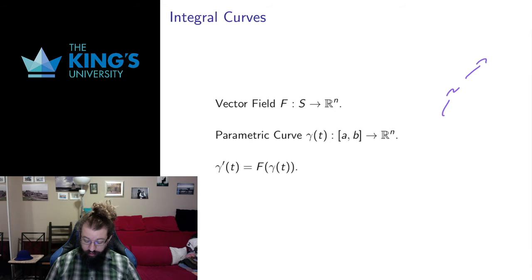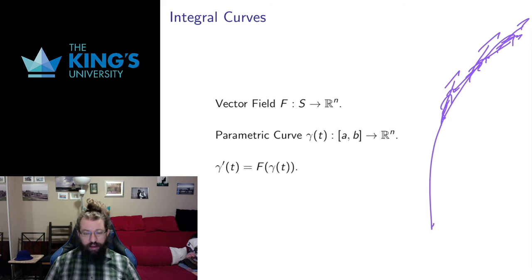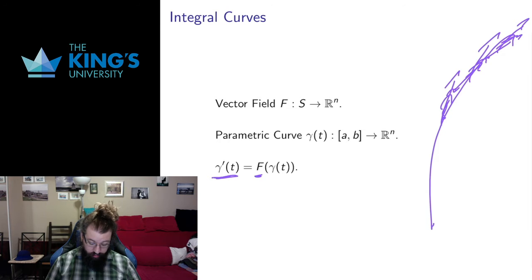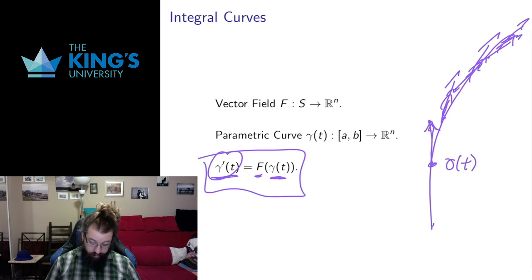If I have the arrows of the vector field, a parametric curve starting here is going to go in this direction, when it gets over here it goes in this direction, when it gets over here in this direction — I have a parametric curve that matches those arrows. That means the tangents to the parametric curve have to be the same as the arrows of the vector field. So a parametric curve is an integral curve for a vector field if its tangents are the same as the vector field evaluated at that point on the integral curve.